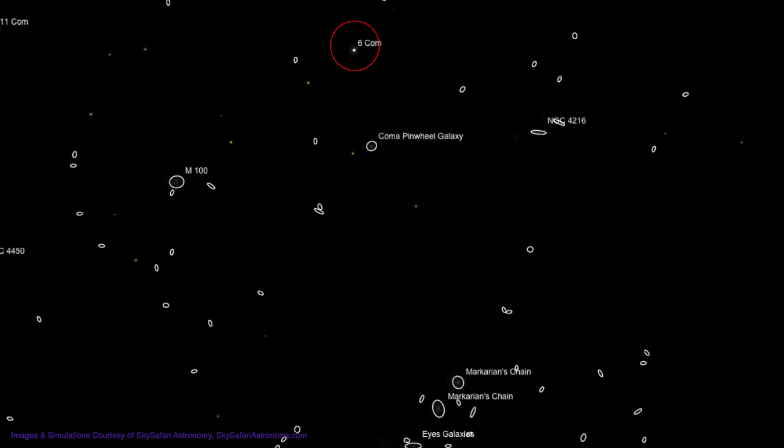From 6 Coma, make your first move to the first 6th magnitude star, which lies about 3 quarters of a degree straight down. Now move about another 3 quarters of a degree, this time to the lower right, to that 7th magnitude star I mentioned.